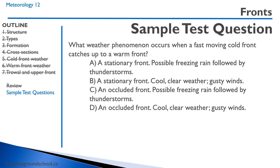Final question: What weather phenomenon occurs when a fast-moving cold front catches up to a warm front? When a cold front catches up to a warm front, we call that an occluded front, which causes a trowel — a trough of warm air aloft. You get both cold front and warm front weather: possible freezing rain in winter, followed by thunderstorms — the worst of both worlds. That concludes this lesson on fronts. Thanks for joining me and we'll see you in the next lesson.